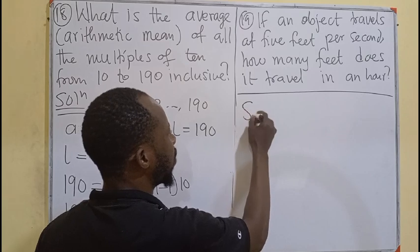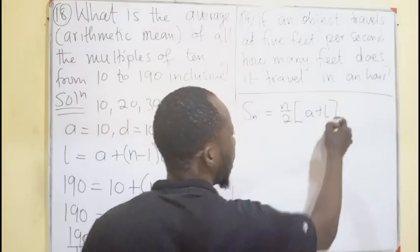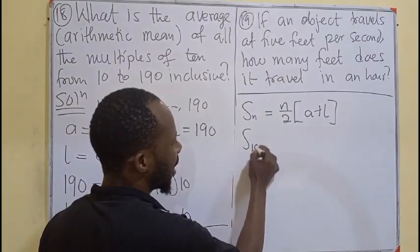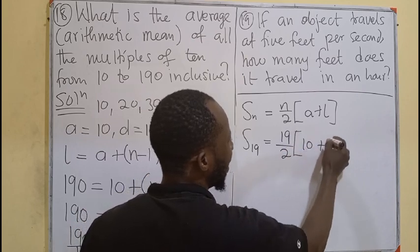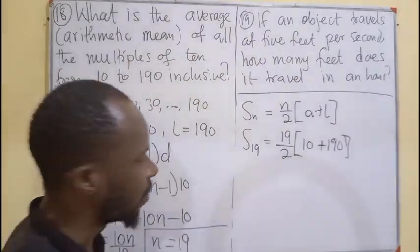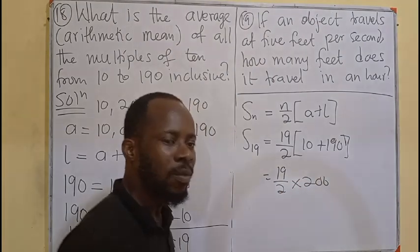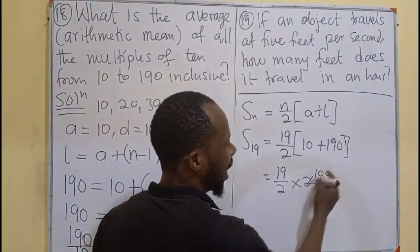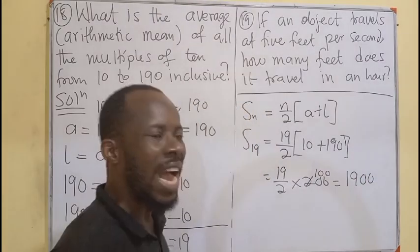We know the sum of the sequence is giving us N over 2, A plus L, where the N stands for number of terms. So, that's 19 numbers. We are adding them. The first number is 10. The last number is 190. In that bracket, you will be having 200. So, 19 over 2 times 200. I believe you know 2 will cancel to give us 100. And 100 times 19 will be 1,900. Meaning, the sum of all the numbers will be 1,900.